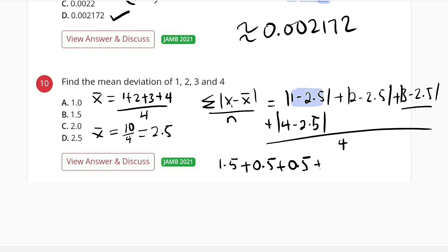And last one, we have 4 minus 2.5, which will give us 1.5, the whole of this by 4. If you add all of this together, you have to get 4, so we have 4 divided by 4, which is equal to 1, and which is option A. You can see it here.